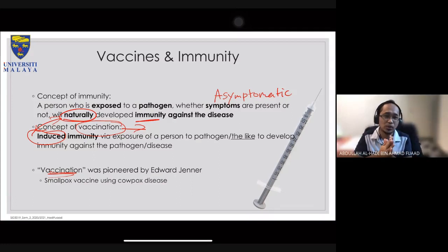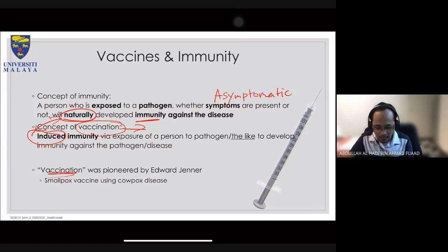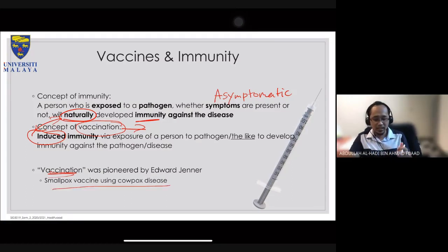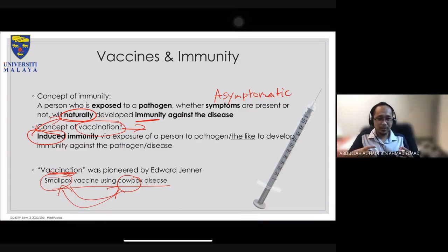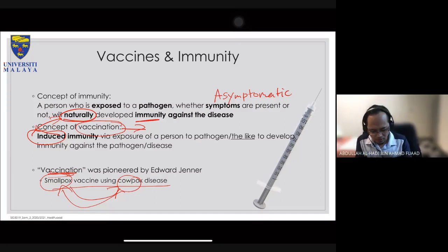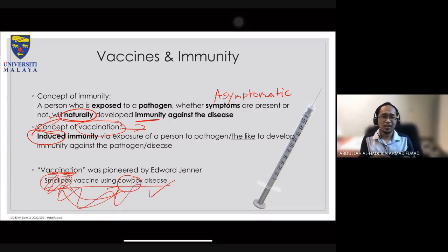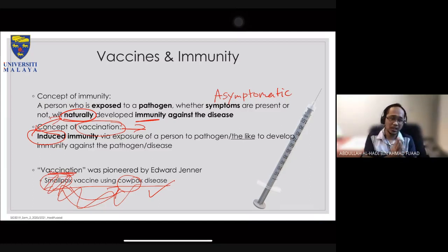Edward Jenner was the first person who actually reported the use of a vaccine. In his particular case, he developed a vaccine against smallpox using cowpox disease. Smallpox is like chickenpox — you get pimple-like symptoms throughout your body. It's very painful and normally kills you, making it more dangerous than chickenpox. A long time ago, this disease killed a lot of people.